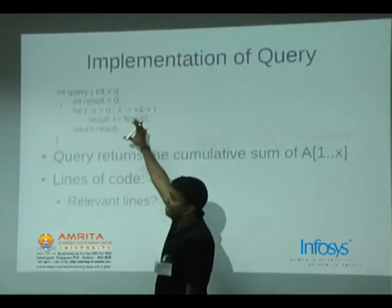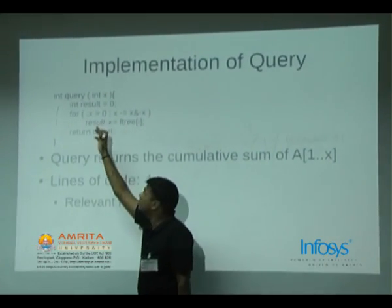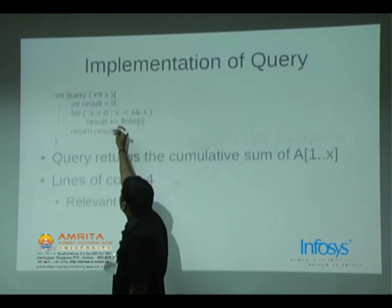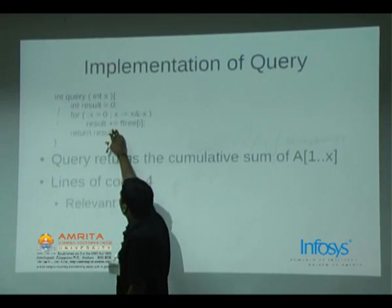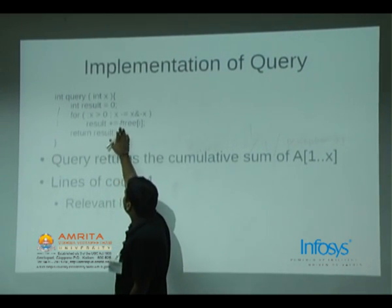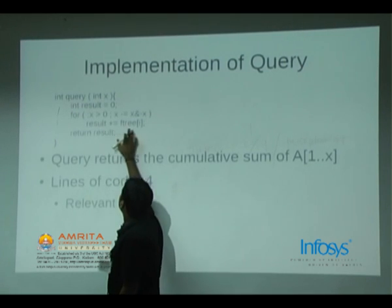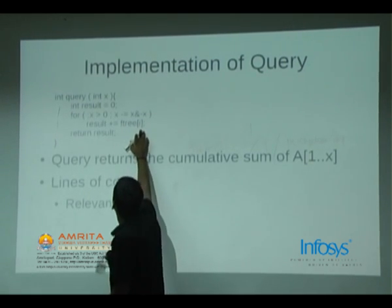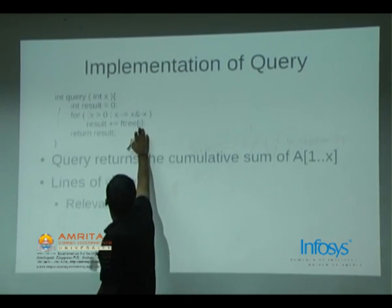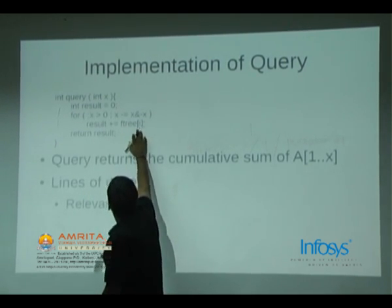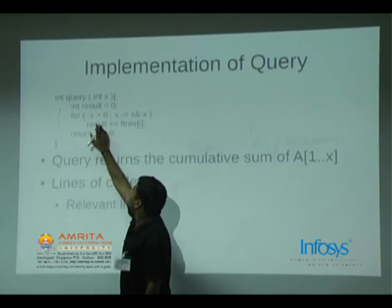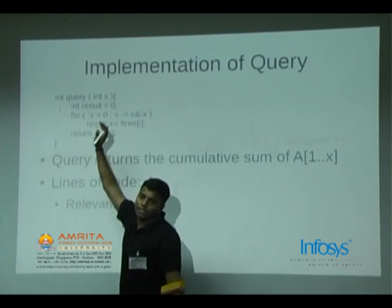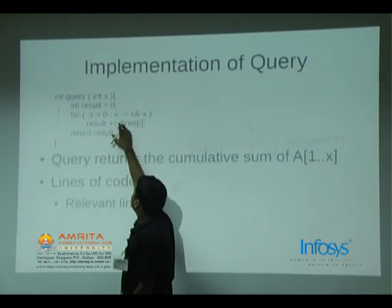The query function — int query(x) gives the cumulative sum up to x. What I do is: set result = 0, then result += FT[x], and repeat this — removing the low bit from x each time — until x is greater than 0.